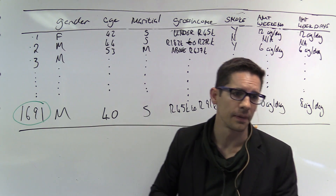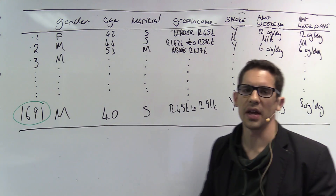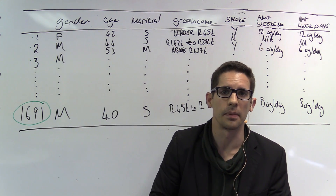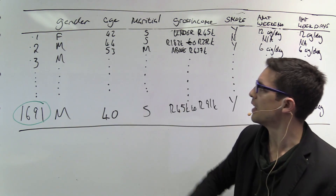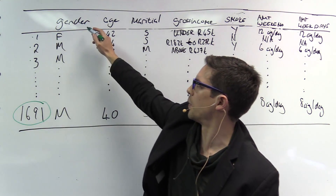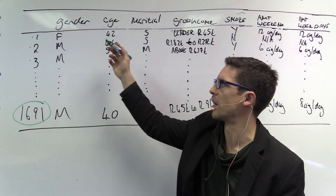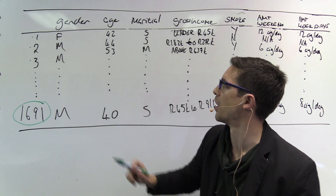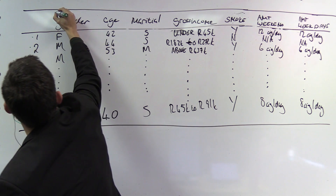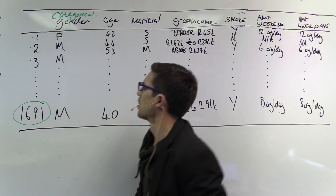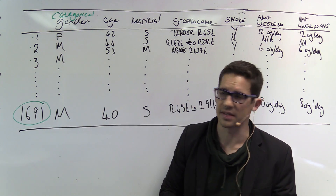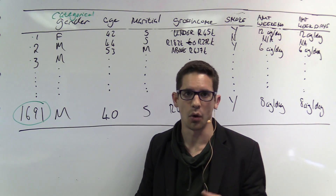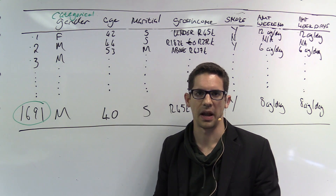The last question — the more difficult one — asks us to classify each variable as numerical or categorical. If categorical, determine if it's ordinal; if numerical, determine if it's continuous or discrete. Starting with gender: the values are female or male, F and M, which are definitely not numbers, so gender is categorical. Is there a natural ordering from female to male? No — we can't say one is higher or lower than the other, so this is just a plain categorical variable.